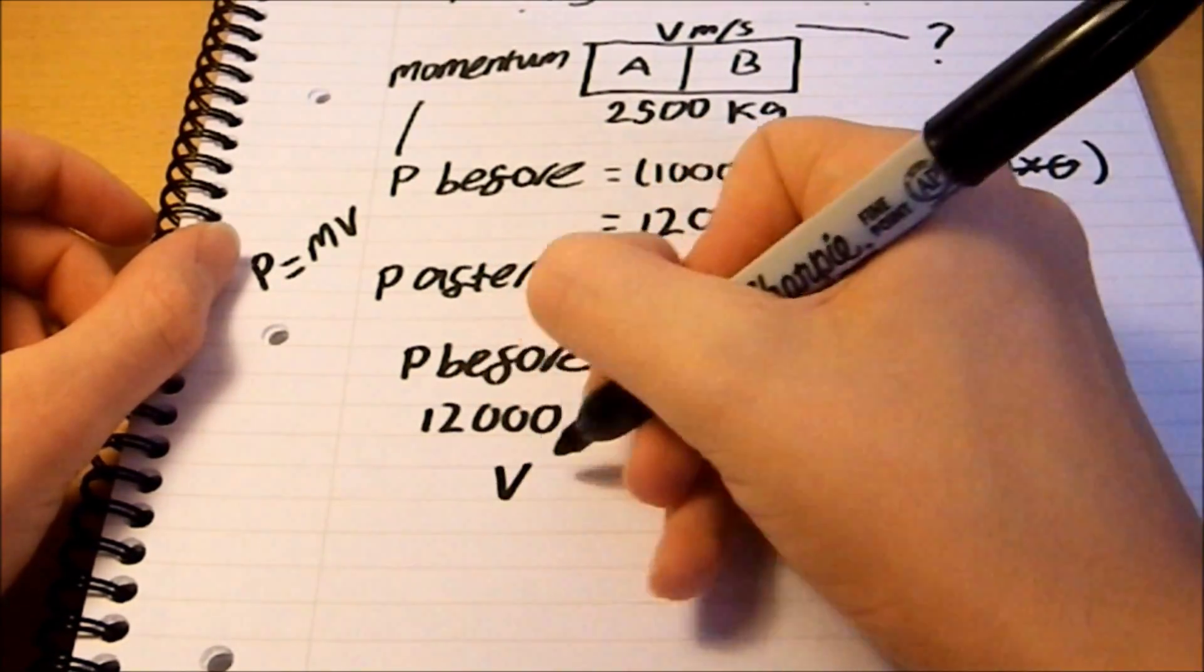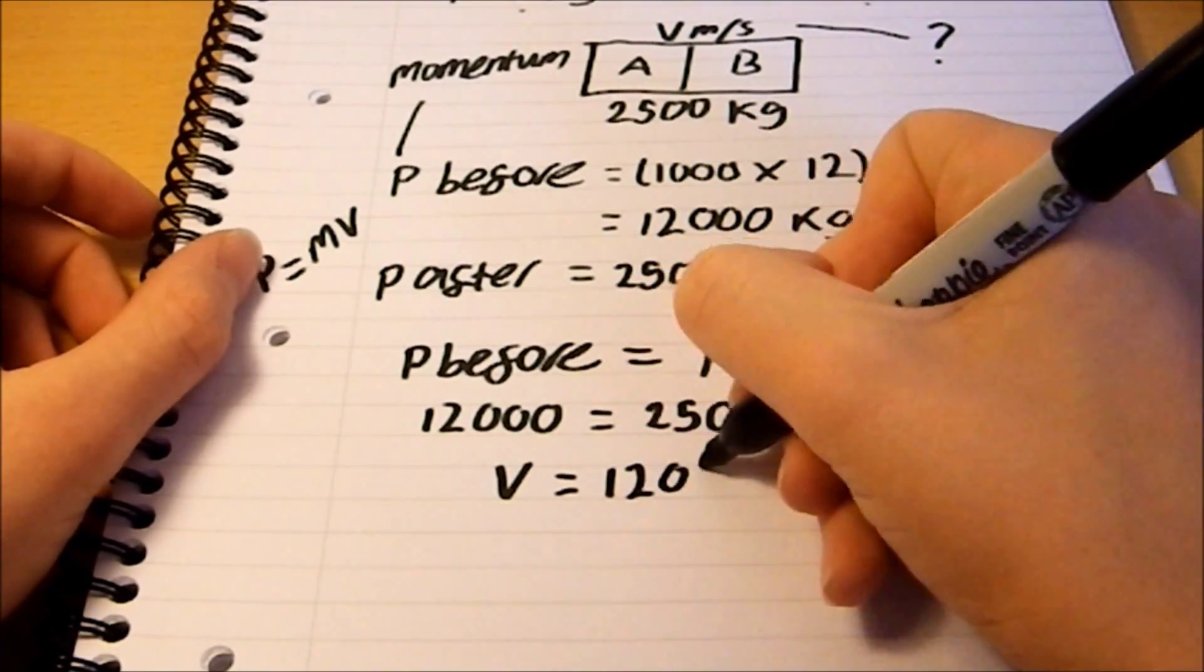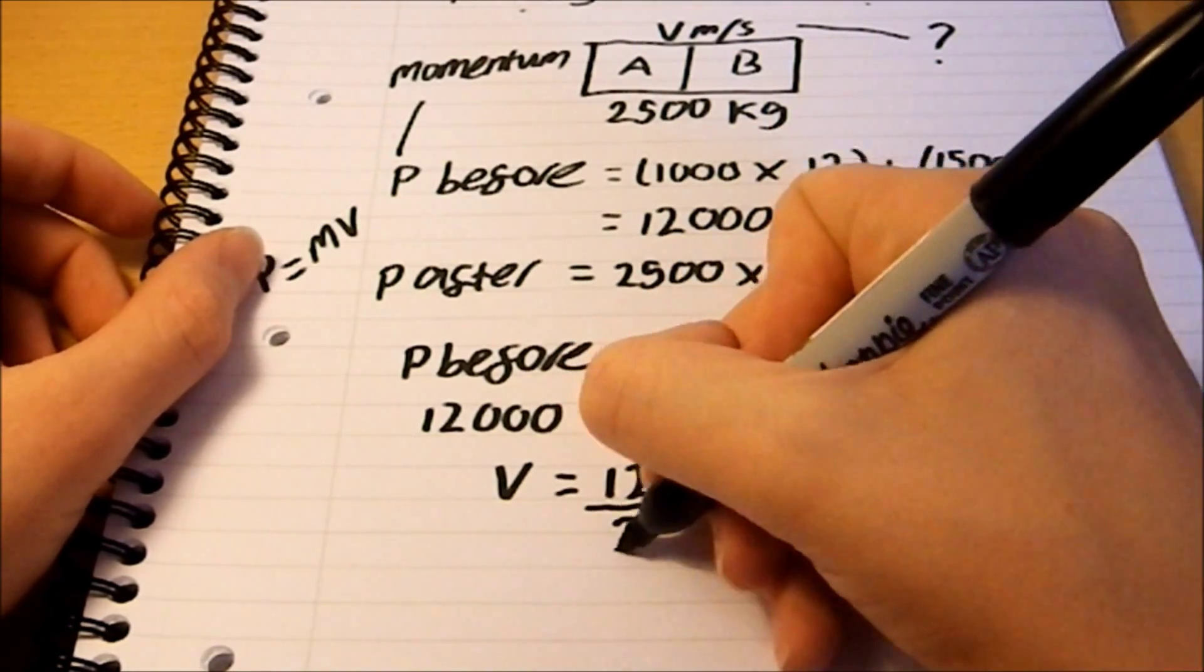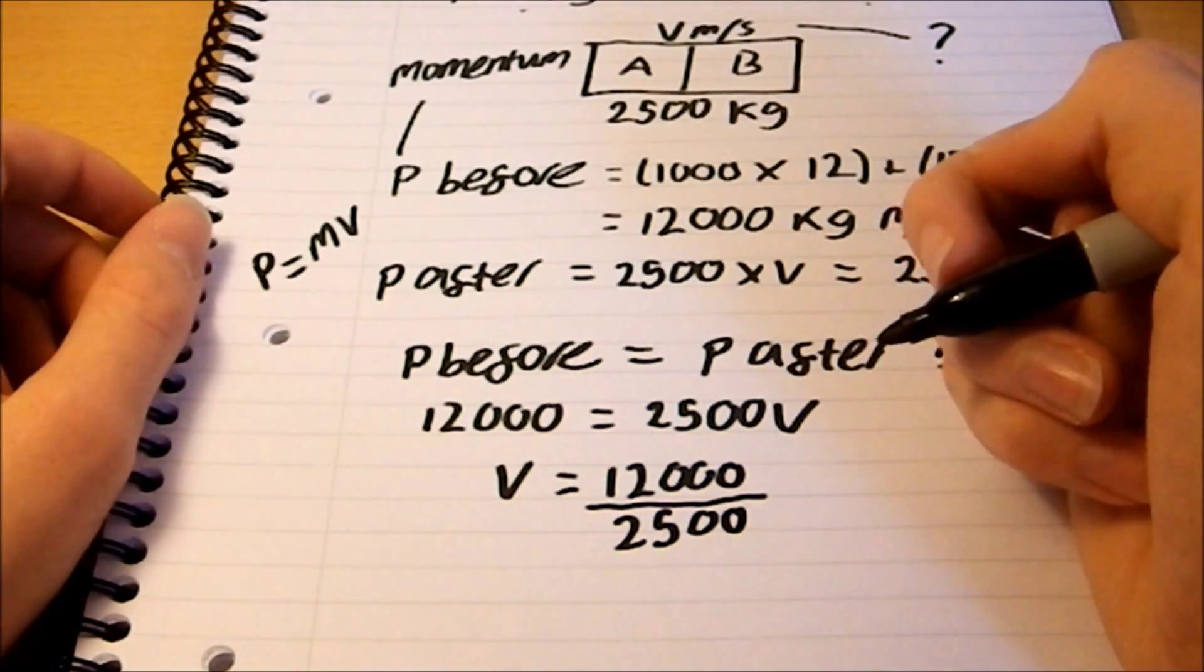So, using that, we can do some simple rearranging and work out V. So, V equals 12,000 over 2,500.